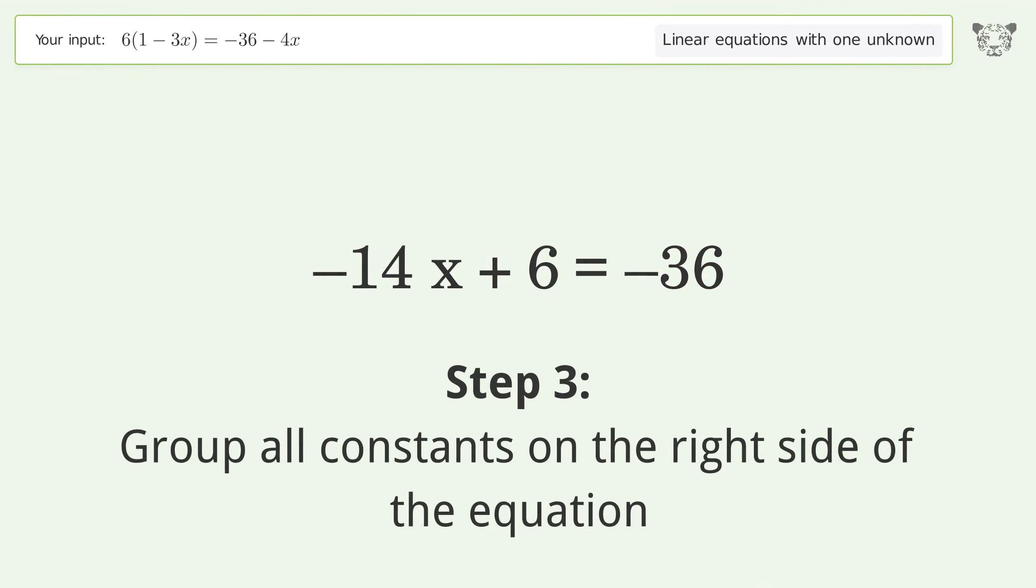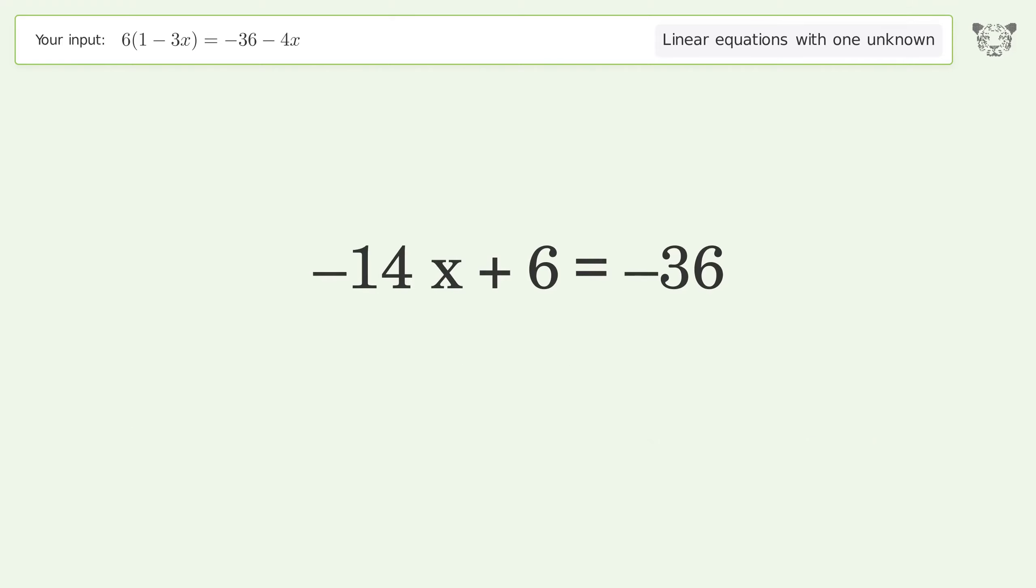Group all constants on the right side of the equation. Subtract 6 from both sides. Simplify the arithmetic.